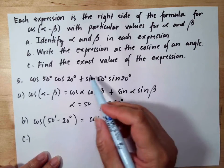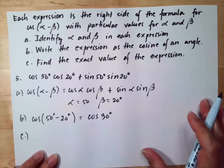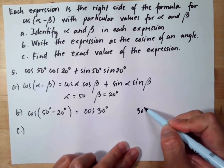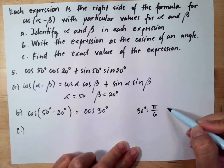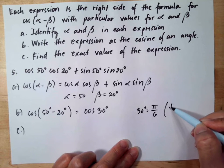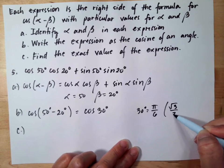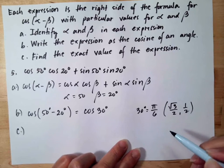Let us see, find the exact value of the expression. So 30 degrees is equal to pi over 6 and the coordinate of this is square root of 3 over 2 and 1 half.